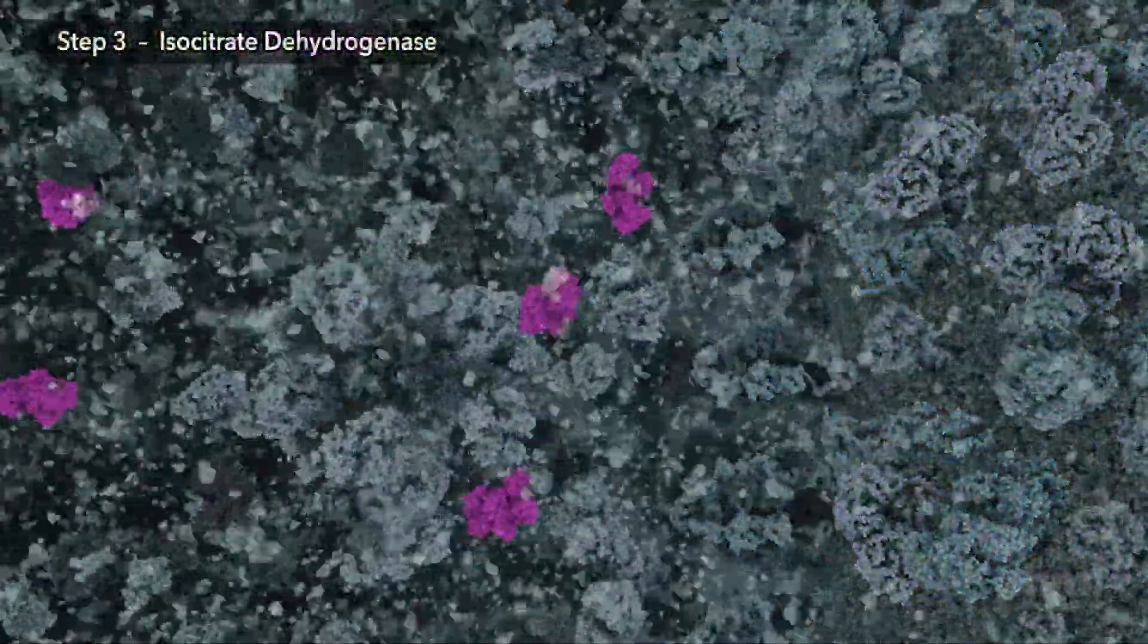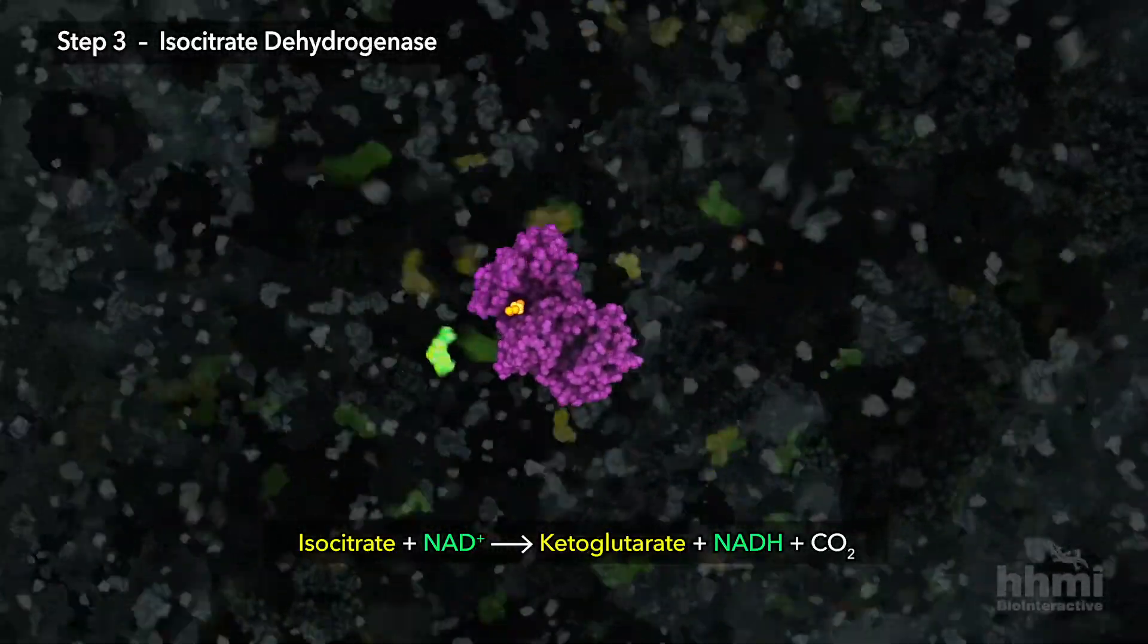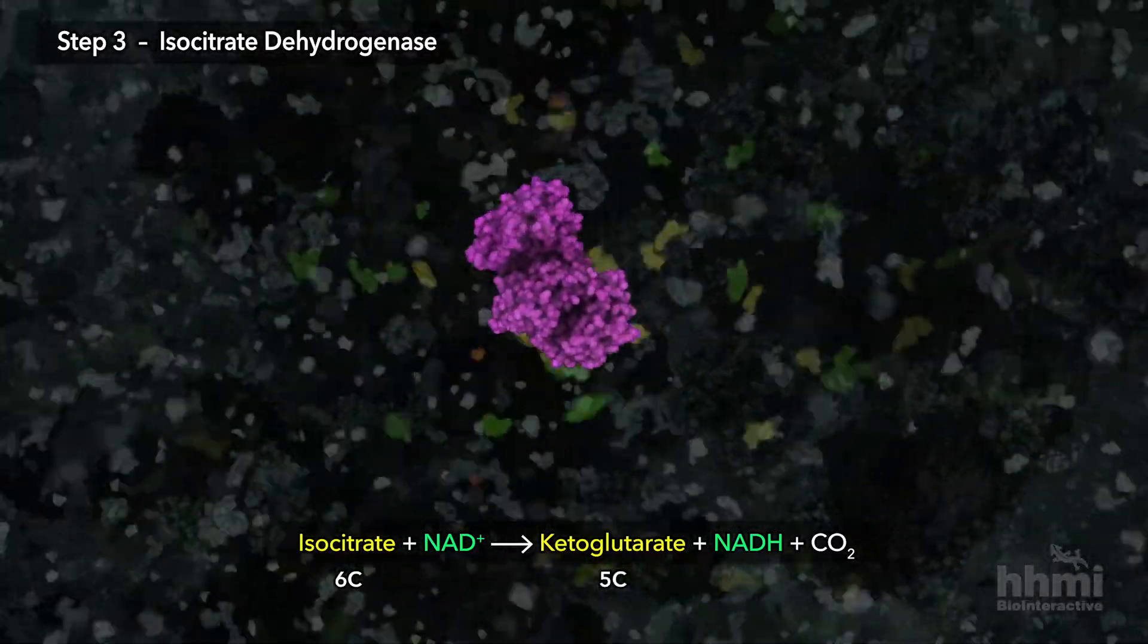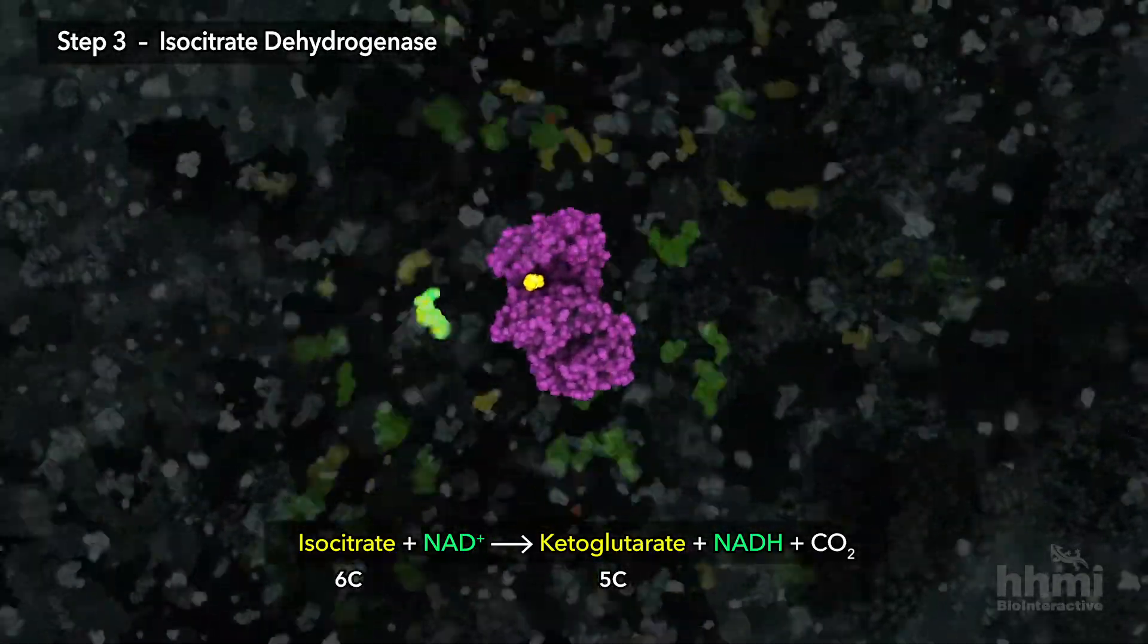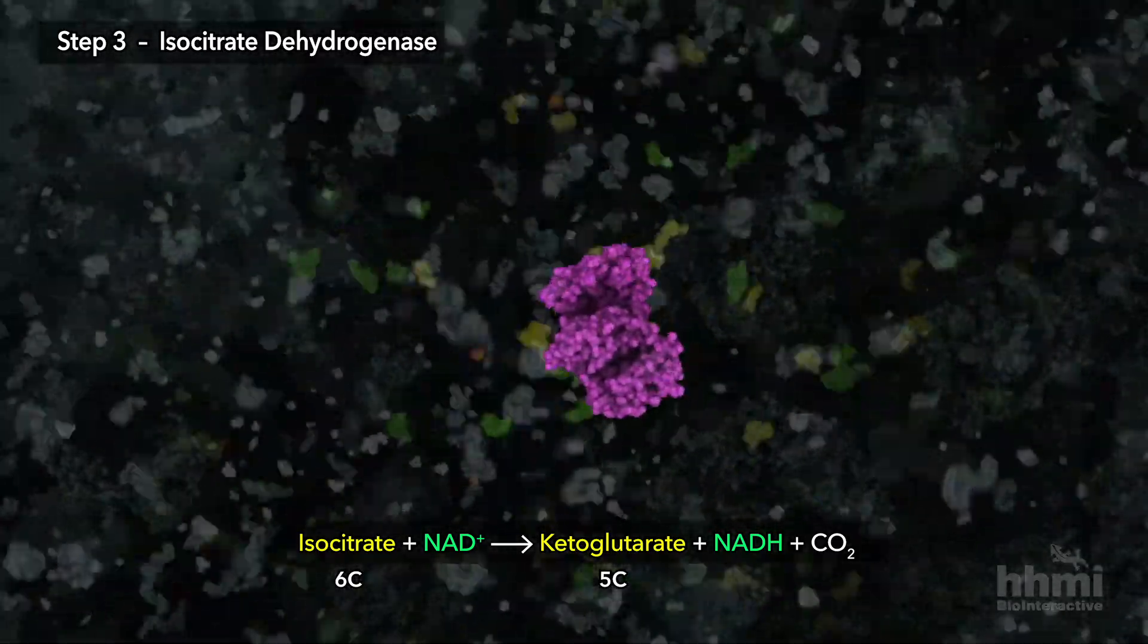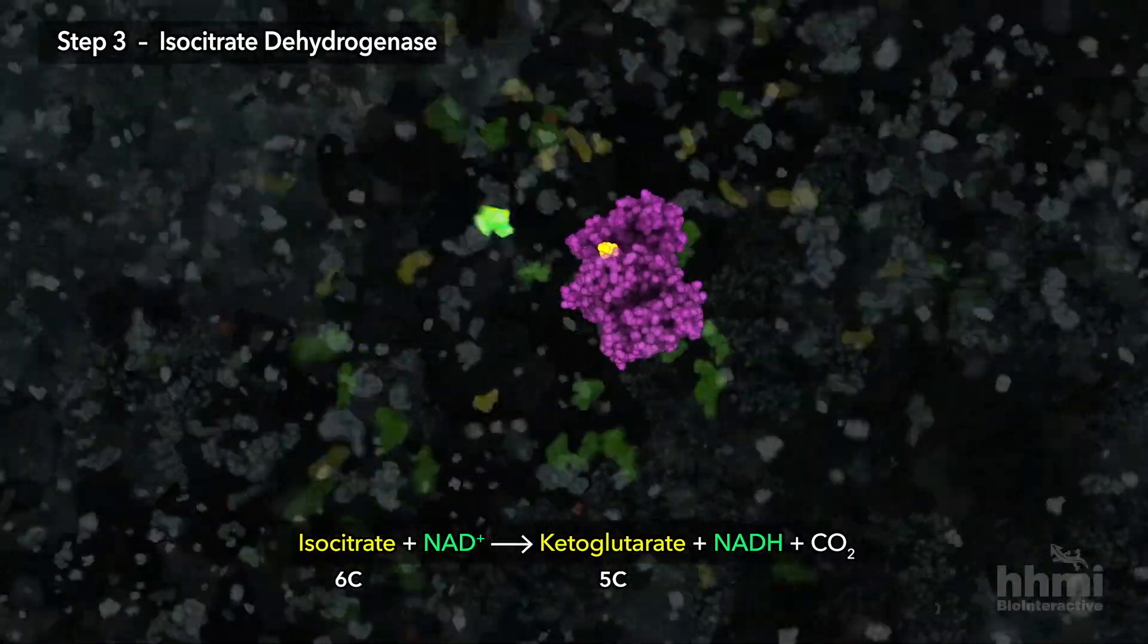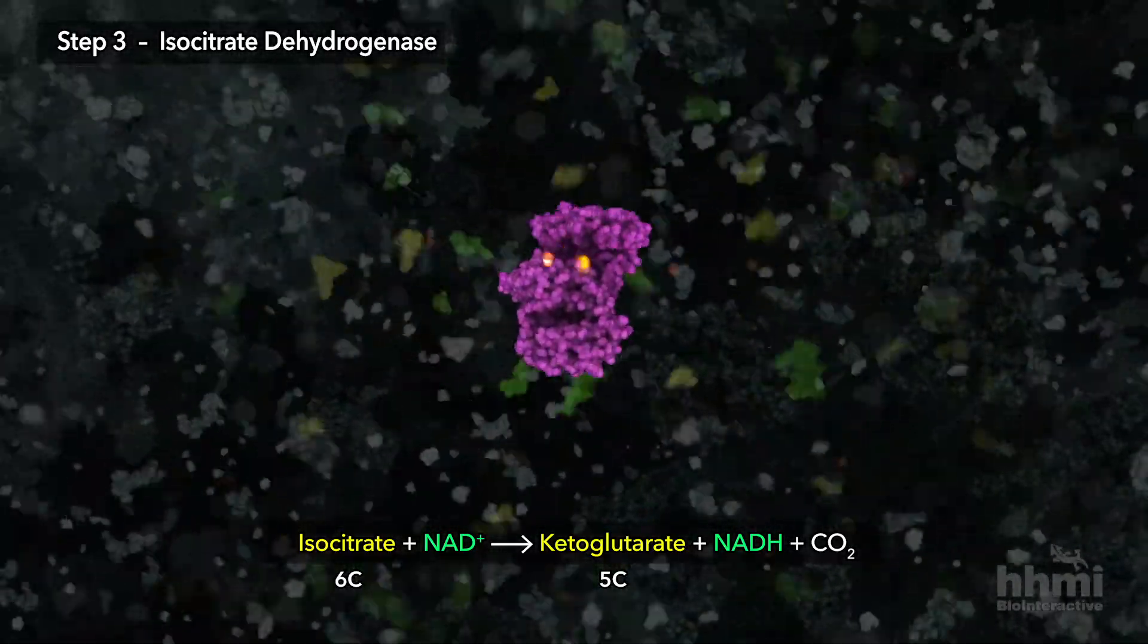Step three of this cycle removes a carbon atom forming carbon dioxide as waste, while converting six-carbon isocitrate to five-carbon ketoglutarate. During this process, chemical energy is harvested when two electrons are transferred to coenzyme NADH, which delivers them to nearby enzymes of the electron transport chain.